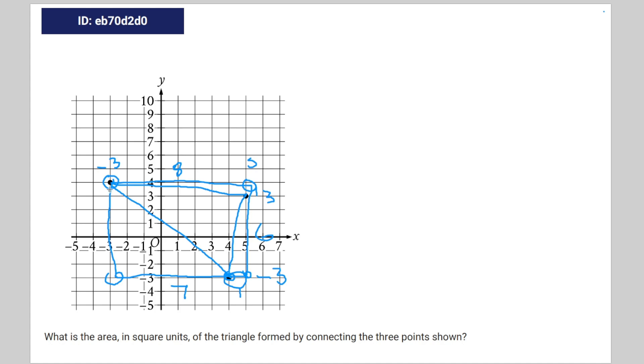This is going to be seven to the power of two divided by two, which equals 24.5.